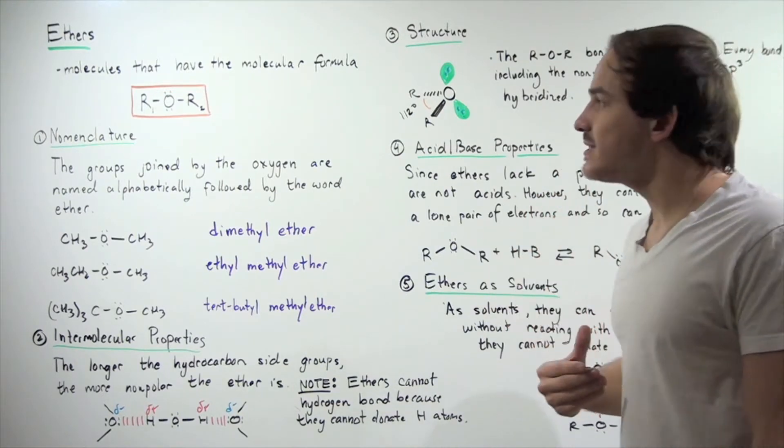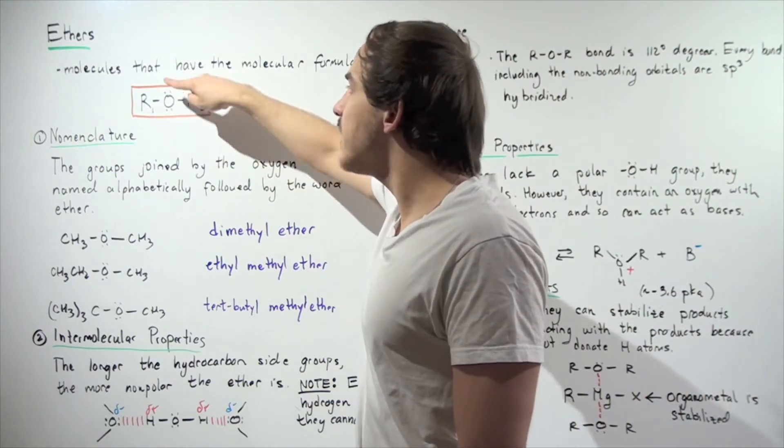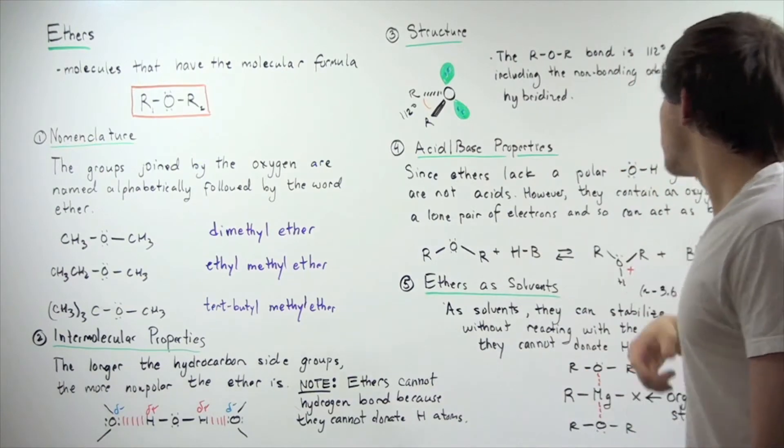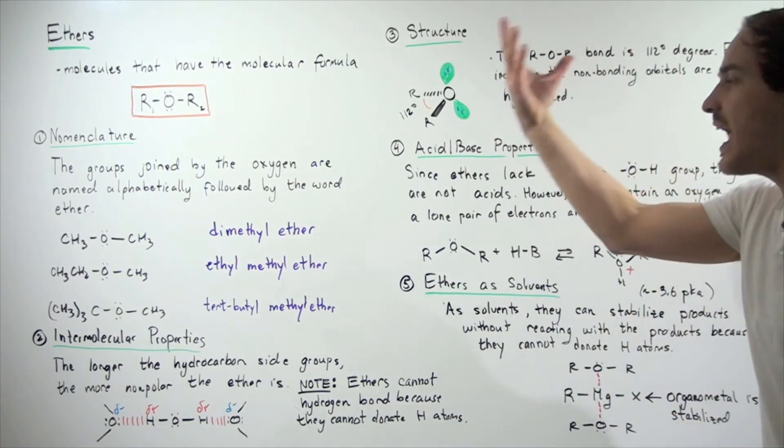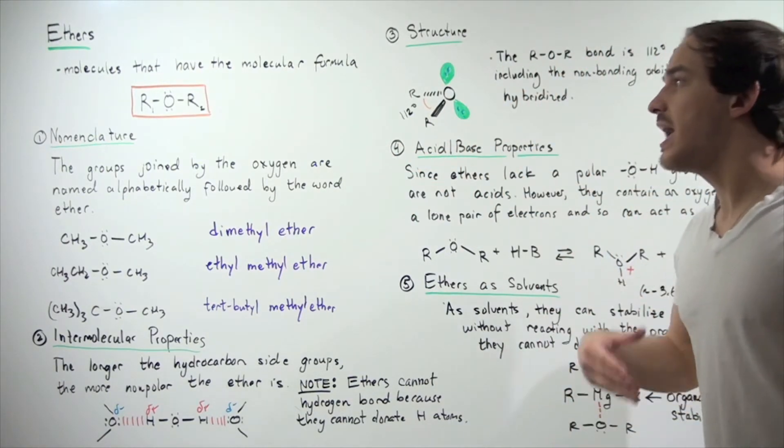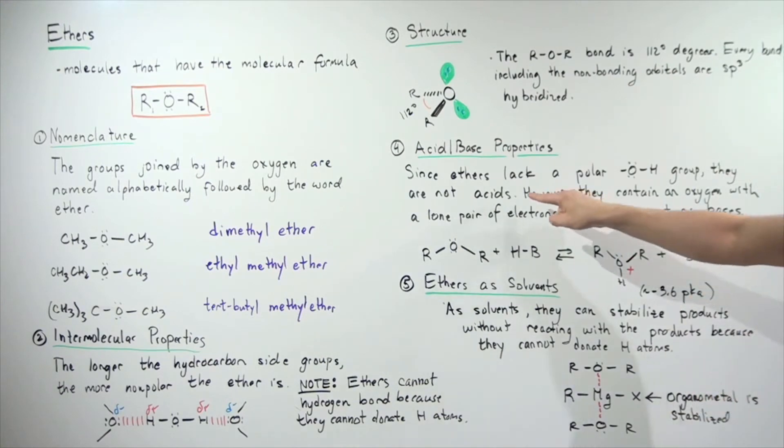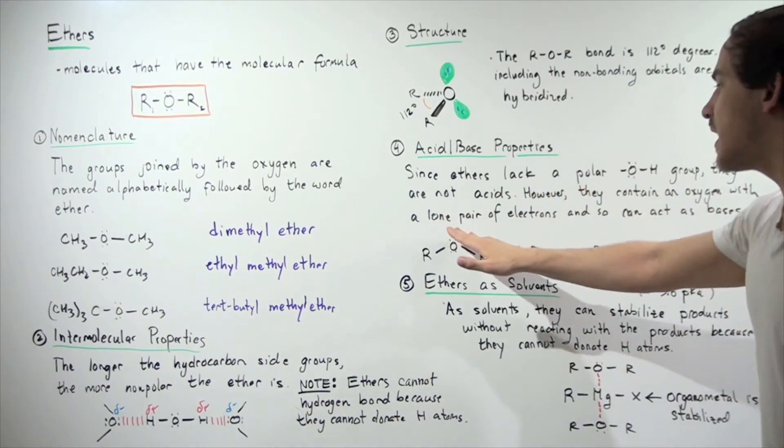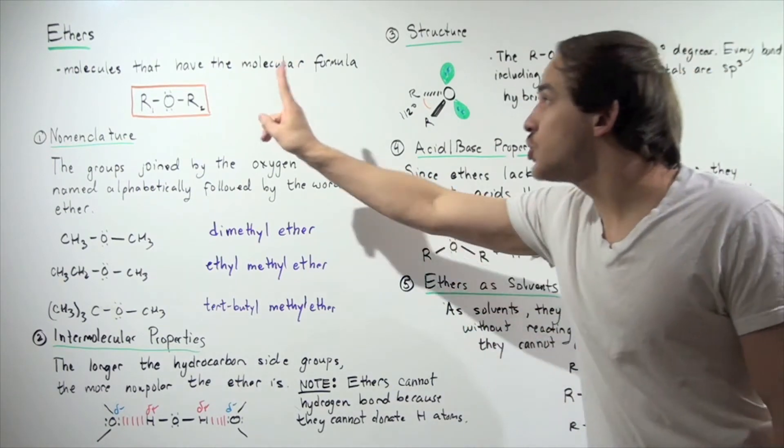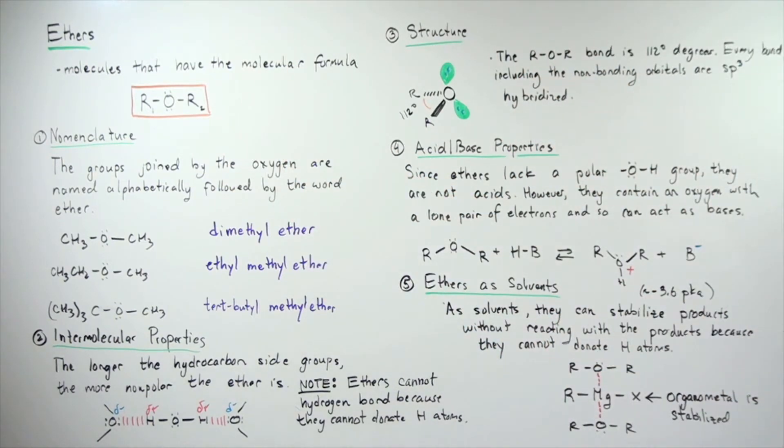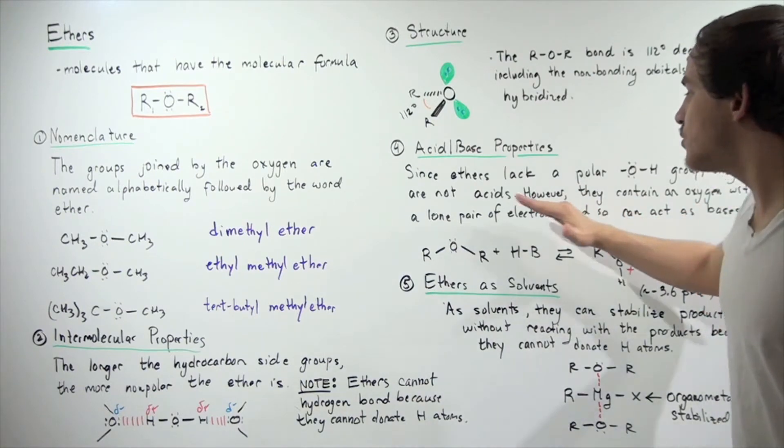However, earlier I said we have two pairs of electrons. That means they are able to act as Bronsted and Lewis bases. They contain an oxygen with two pairs of lone electrons, so they can act as bases.